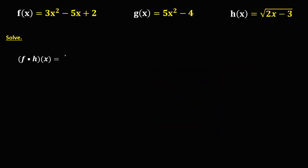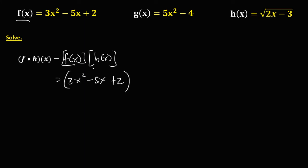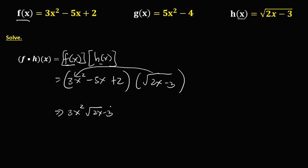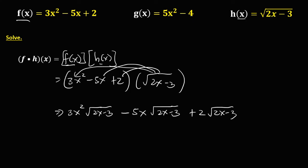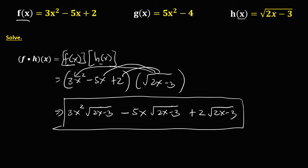For the product of f(x) and h(x): from f(x), that's 3x² - 5x + 2, times h(x), that's √(2x - 3). Distribute to every term: 3x²·√(2x - 3), minus 5x·√(2x - 3), plus 2·√(2x - 3). Since we cannot simplify further, this is the final answer.